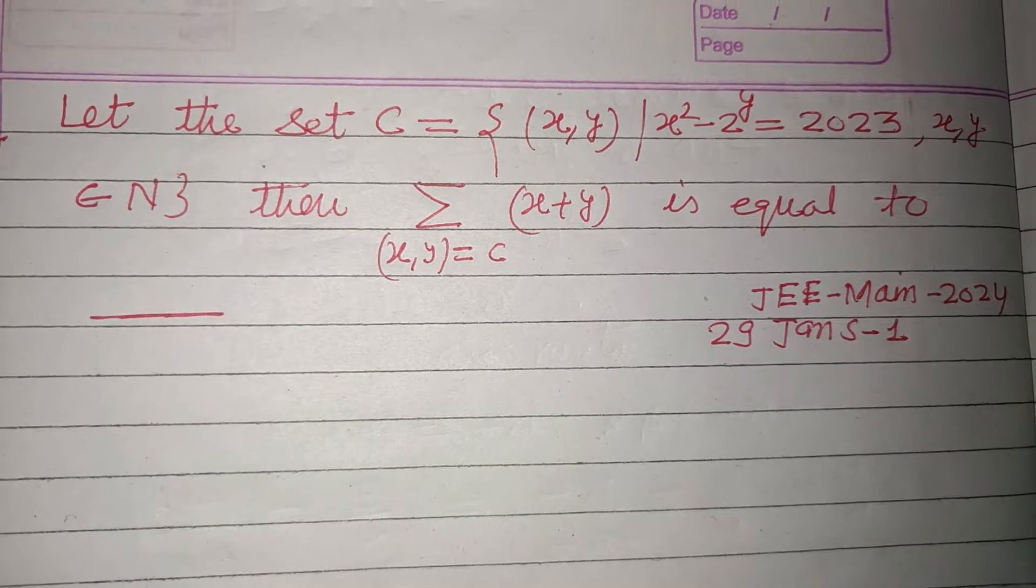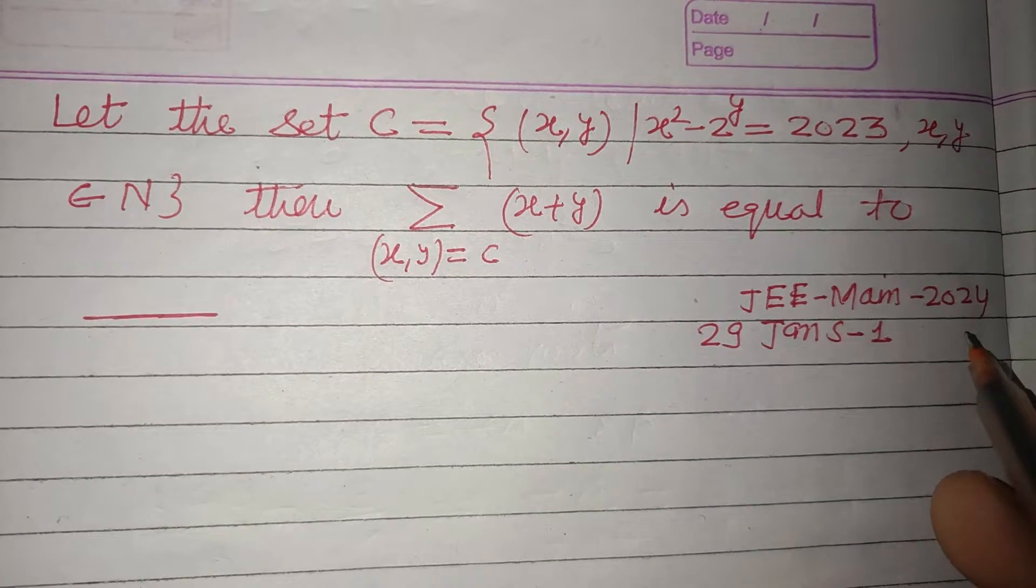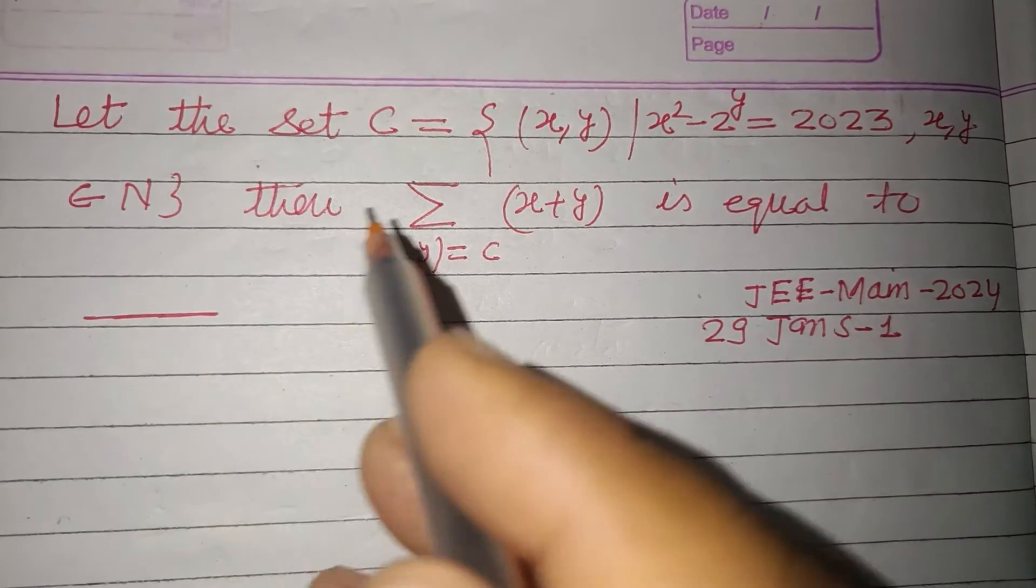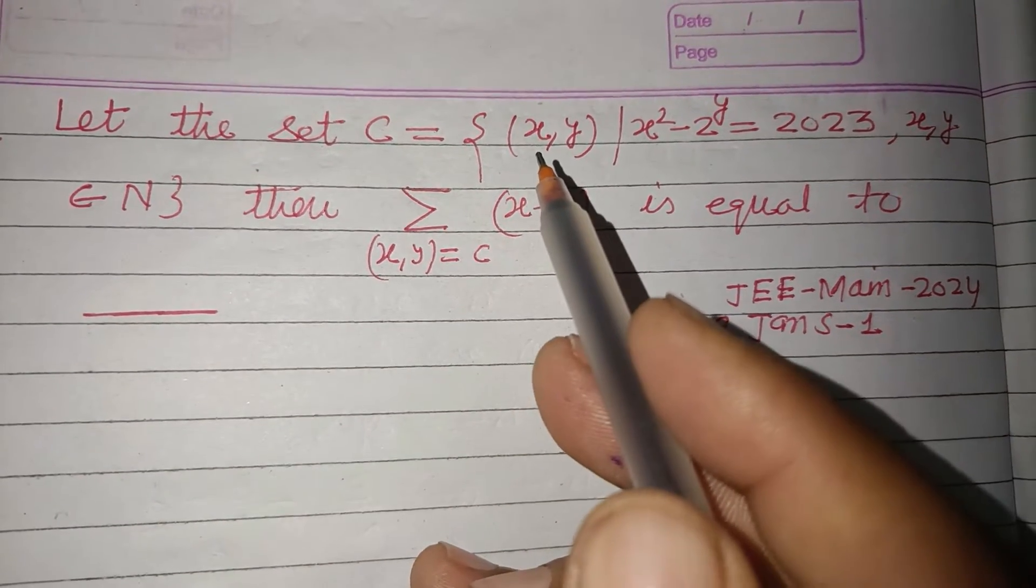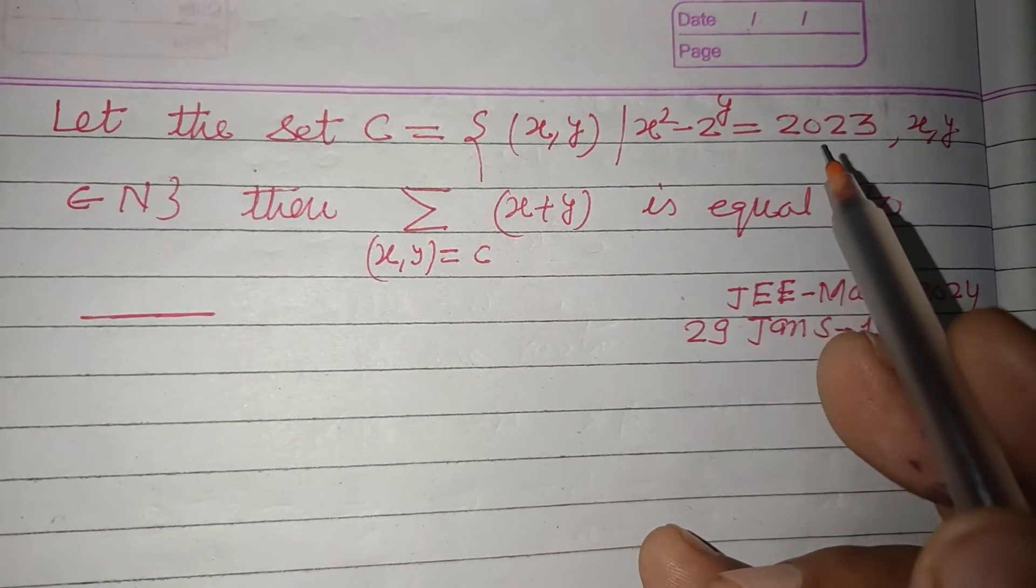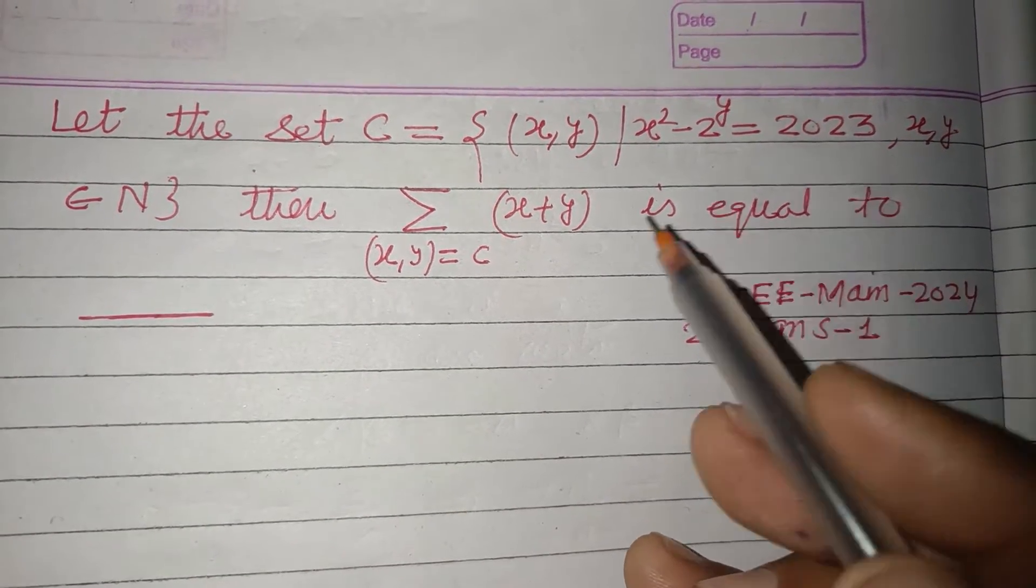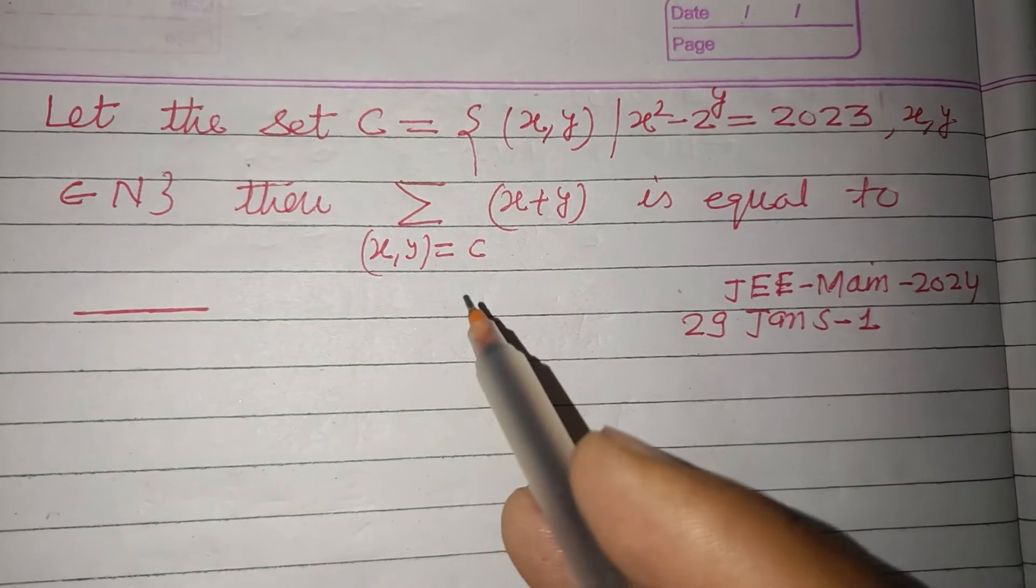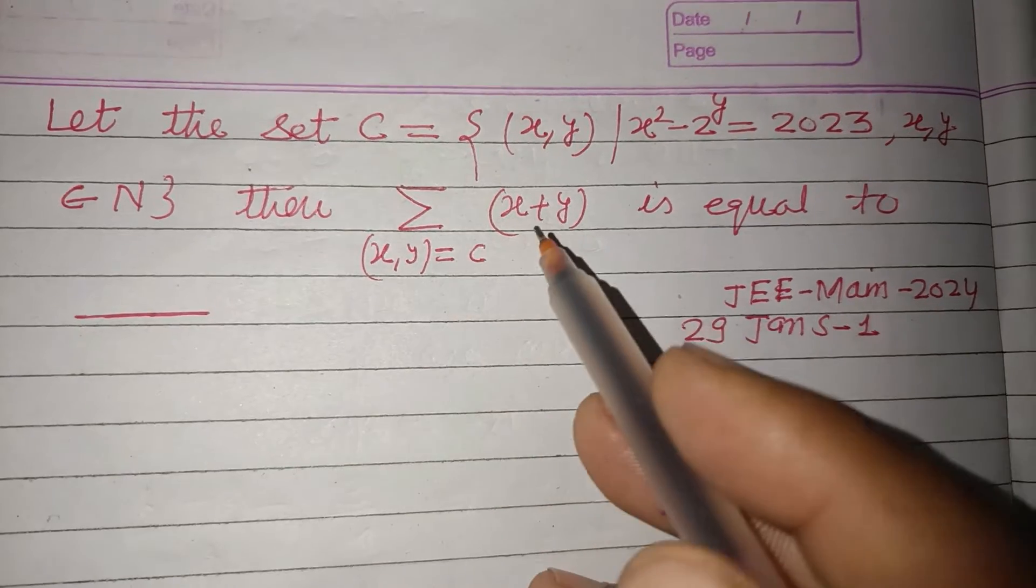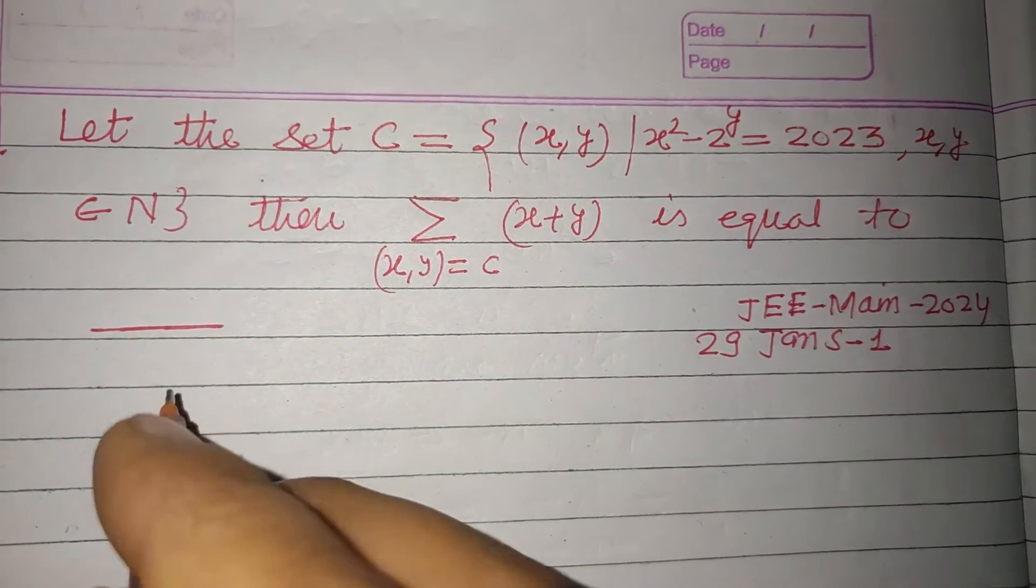Hello viewers, warm welcome to this YouTube channel. This is a question from JEE Main 2024, January 29th, shift 1. Let the set C equal to (x, y) such that x² - 2^y = 2023, where x, y belongs to natural numbers. Then Σ(x+y) for (x,y)∈C is equal to what?